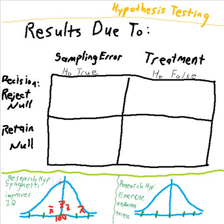What do I mean by that? Consider our misguided researcher, whose hypothesis is that spaghetti improves IQ. He goes out and randomly selects 25 people, gives them spaghetti, and then tests their IQ. He's going to compare the average IQ of these people who have eaten spaghetti to the population.